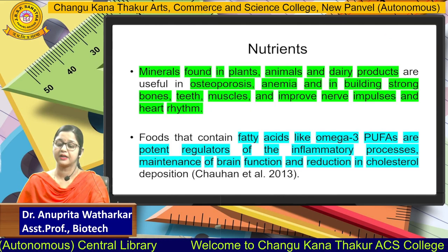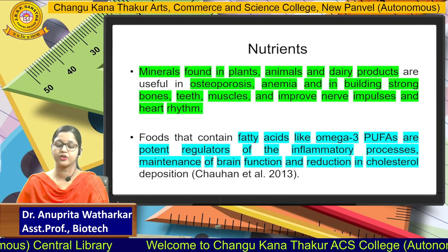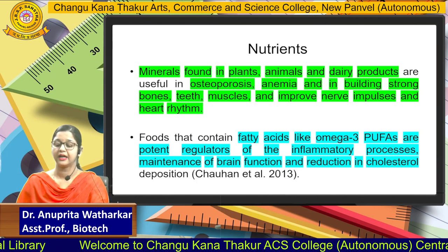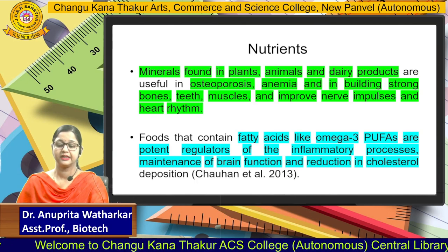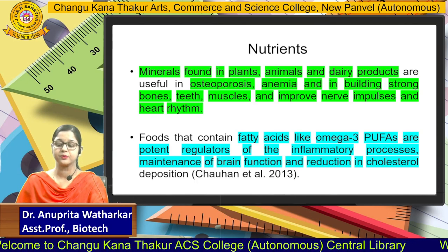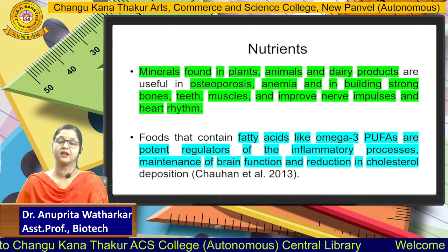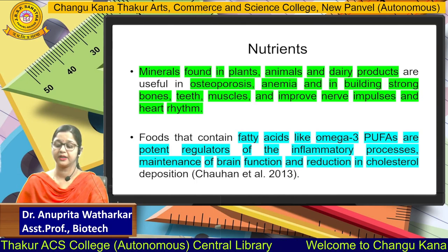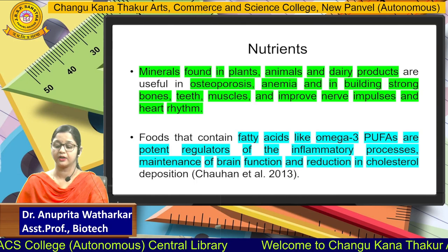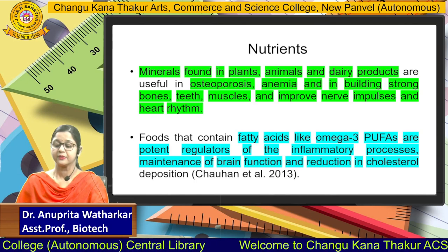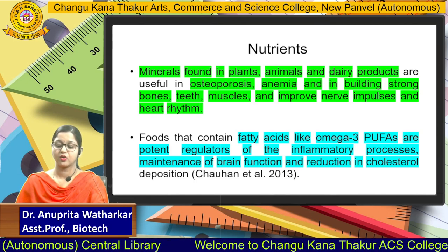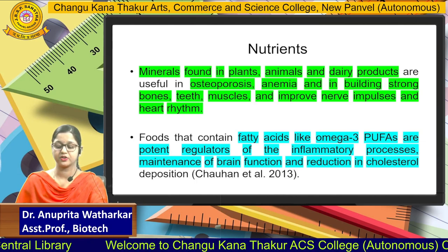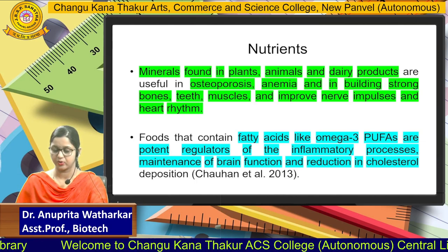Minerals found in plants, animals, and dairy products are useful in osteoporosis, anemia, and in building strong bones, teeth, and muscles, and improve nerve impulses and heart rhythms. Foods that contain fatty acids like omega-3 or PUFAs are potent regulators of inflammatory processes, maintenance of brain function, and reduction in cholesterol deposition.